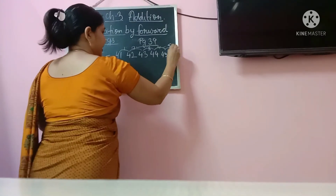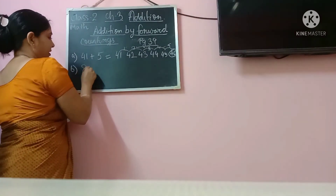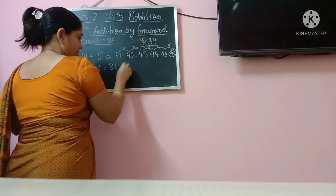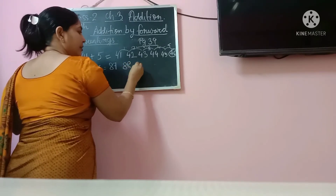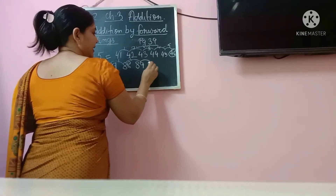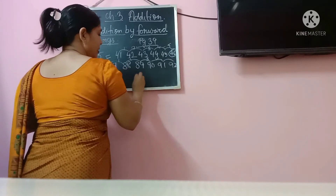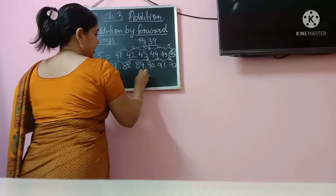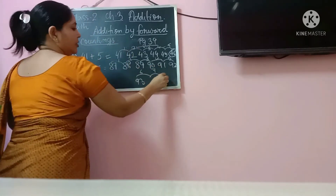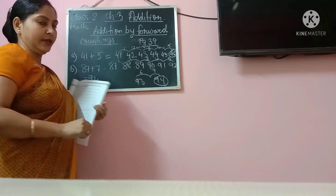How many steps? 1, 2, 3, 4 — and then the fourth step will be 45 and fifth step is 46. So your answer is finally 46. So 41 plus 5 is 46. Number B: the question is 87 plus 7. We will start with 87, then 88 first step, 89 second step, 90 third step, 91 fourth step, 92 fifth step, 93 sixth step, and 94 seventh step. So 87 plus 7 is equal to 94.